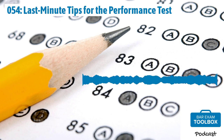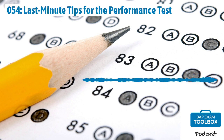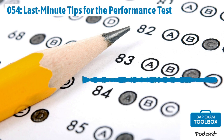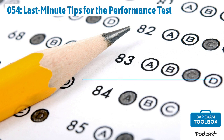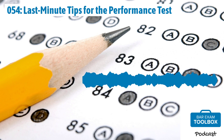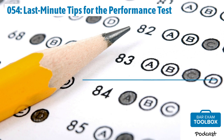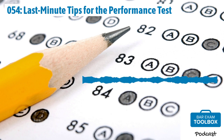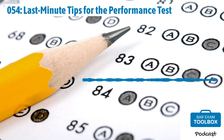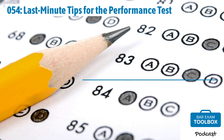Sometimes these performance tests are really straightforward. I remember one of the performance tests on my bar was just an eight-factor test. I finished early and went back thinking I must have missed something — like, how could it be that straightforward? I reread the task memo and went back through the library. And it was just an eight-factor test. Some people went and either made it more complicated or changed their answer and ended up probably pulling their score down because they didn't accept it for what it was — something very direct.